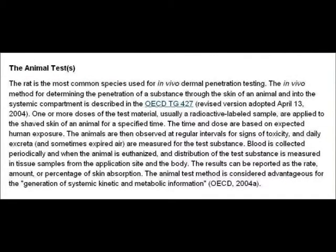This slide specifically talks about the animal test, which is OECD TG427. It reads: the rat is the most common species used for in vivo dermal penetration testing. The in vivo method for determining the penetration of a substance through the skin of an animal and into the systemic compartment is described in OECD TG427. One or more doses of the test material, usually a radioactive labelled sample, are applied to the shaved skin of an animal for a specified time.